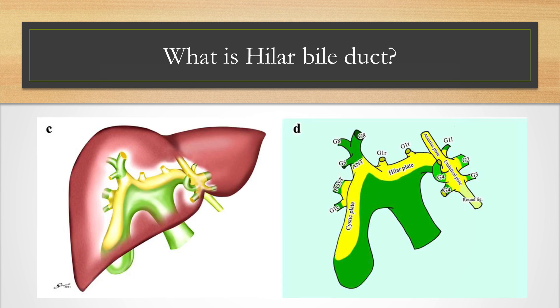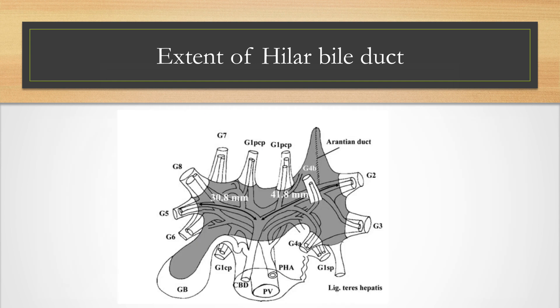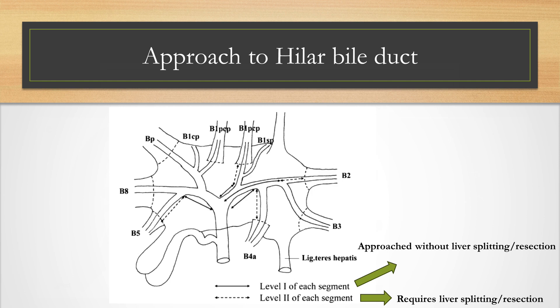The Glissonian sheath is thickened in selected parts of the liver to form the plate structures, and the term hilar bile duct refers to the portion of the bile duct covered by the hilar plate. The extent of the hilar bile duct is approximately 3.1 cm on the right side and 4.2 cm on the left side. The level 1 hilar bile duct can be approached without liver splitting or resection, whereas level 2 hilar bile ducts require liver splitting or resection.